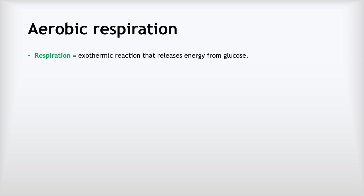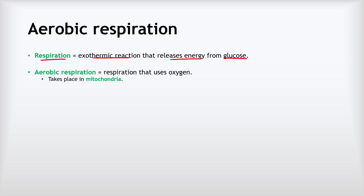Let's start by looking at aerobic respiration. Respiration in general is an exothermic reaction that releases energy from glucose, and that energy is used to power hundreds of different processes taking place in our cells all day every day. There are two main kinds: aerobic and anaerobic. Aerobic respiration uses oxygen and takes place in the mitochondria of each of our cells. The equation is: glucose plus oxygen makes carbon dioxide and water.